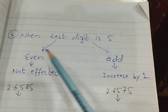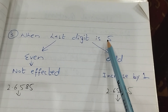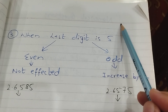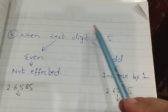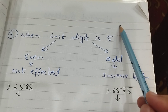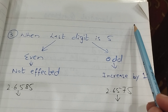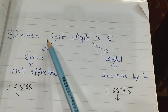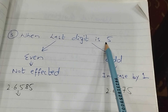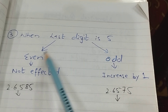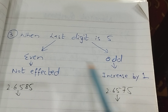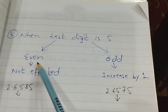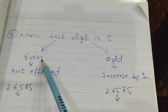Okay students, now the third point: when the last digit is five. हमने दो बातें पढ़ ली हैं — less than five हो तो ignore, greater than five हो तो increase by one। अब third वाला — when the last digit is five, then what is the condition? यहाँ पर हमारे पास दो conditions हैं: एक even और एक odd।